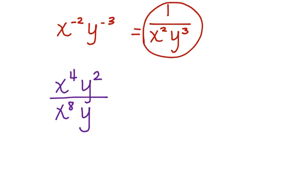Look at this problem down here. We have x to the 4th, y squared, divided by x to the 8th, y. Now, we're going to work with the x's first and then the y's. Watch what happens.